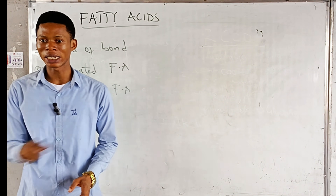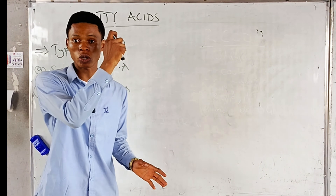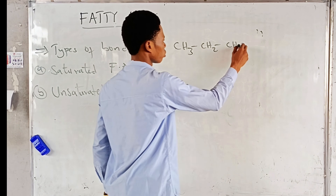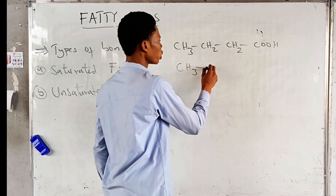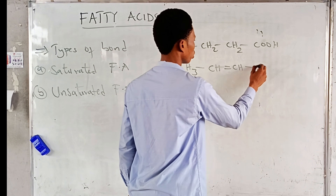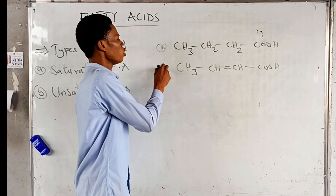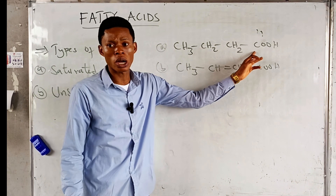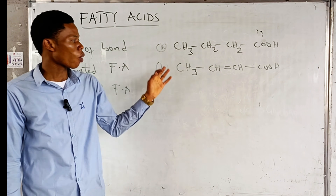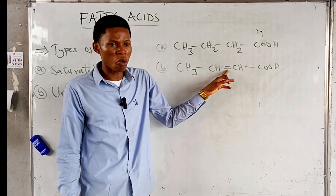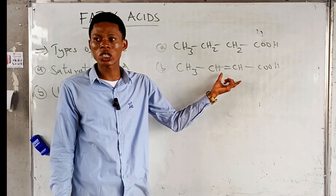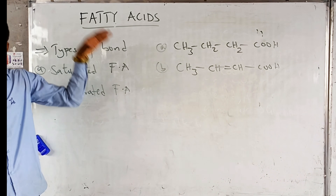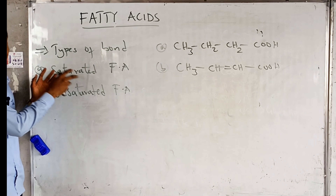So if you compare two fatty acids, A and B — A contains single bonds throughout, so it is a saturated fatty acid, while B contains a double bond, so it is an unsaturated fatty acid. Saturated means single bonds throughout; unsaturated means there is a double bond somewhere.